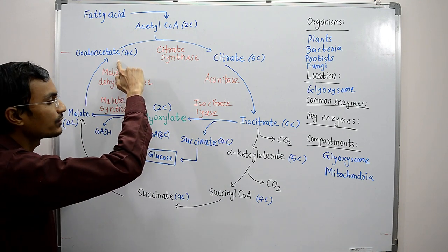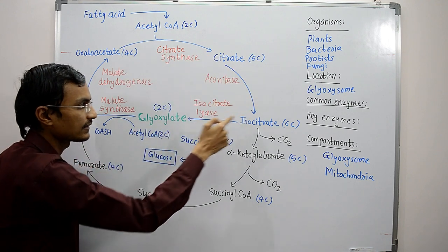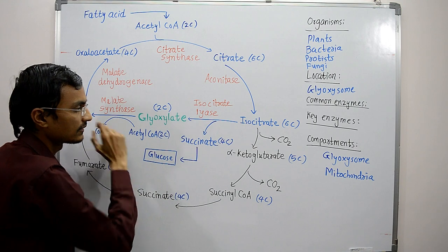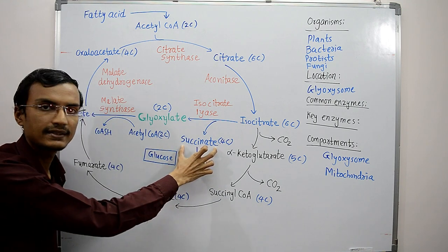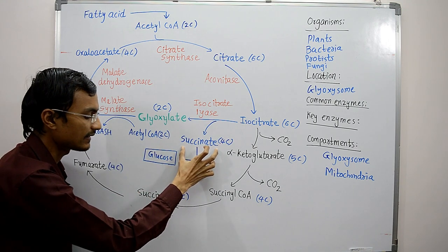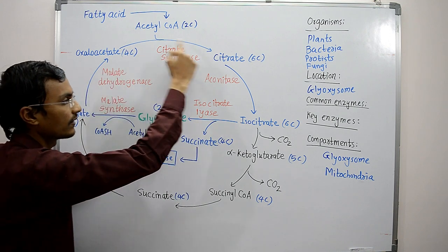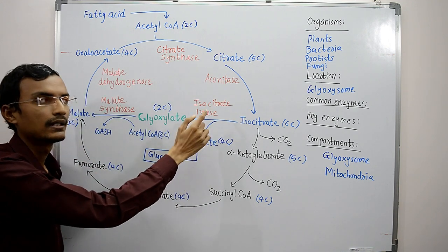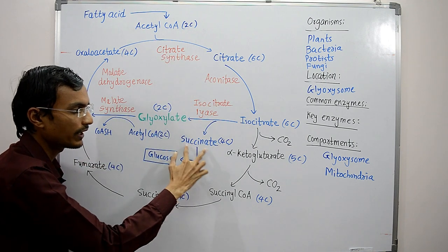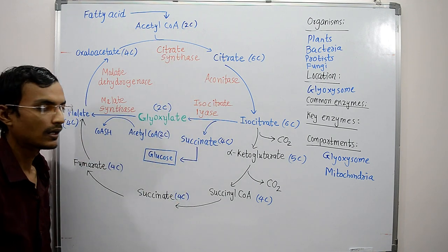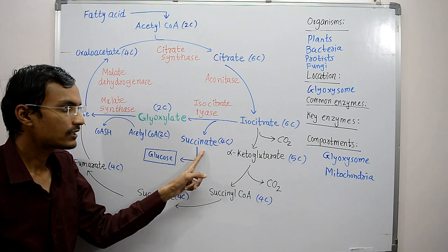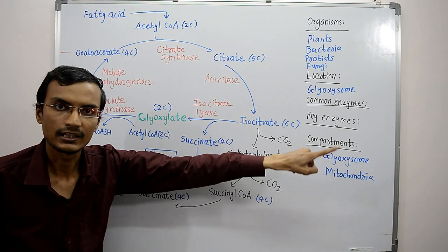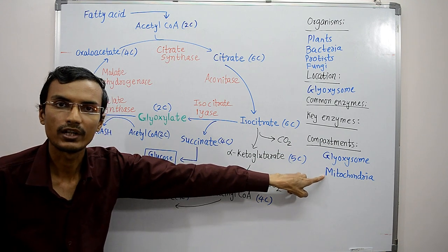Malate is then converted to oxaloacetate by malate dehydrogenase. Oxaloacetate is used to run the next cycle. As the cycle runs, four-carbon succinate is produced. If the cycle runs once, one molecule of succinate is produced; if it runs twice, two molecules of succinate are produced inside the glyoxysome.